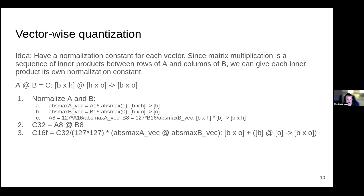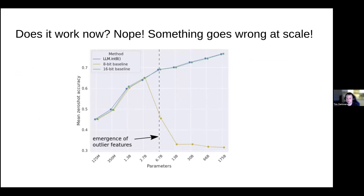If you apply vector-wise quantization, it is a high precision technique, but it still doesn't quite work. Here we have zero-shot performance on some tasks for large language models, with model size on the x-axis. As we scale, the orange line — vector-wise quantization — decreases to random performance, while the green line is the 16-bit baseline we try to match. Something really strange is going on around 6.7 billion parameters, and that's what we solve with the next method.